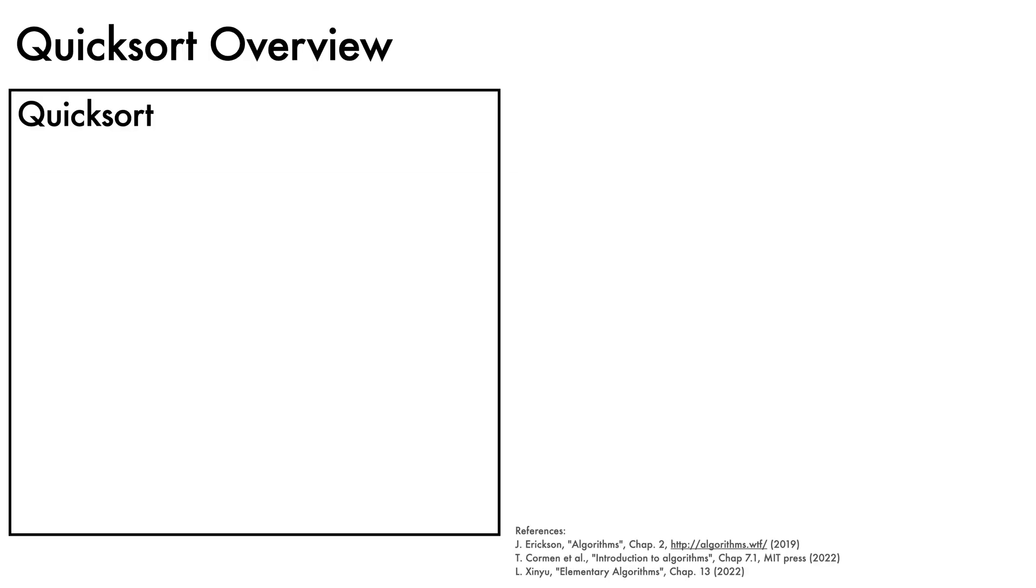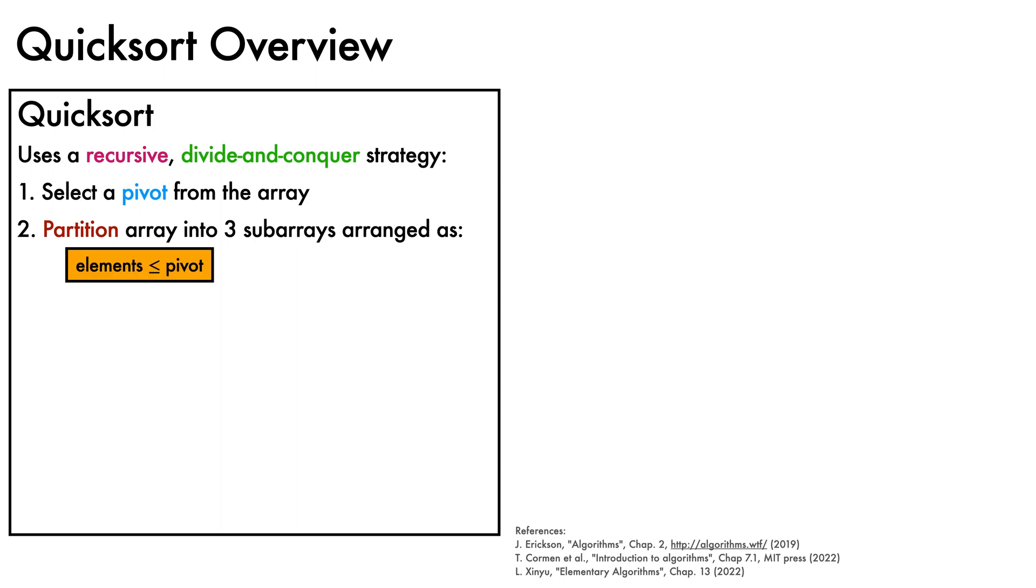The Quicksort algorithm adopts a recursive divide-and-conquer strategy that involves three steps. First, select a pivot from the current array to be sorted. Second, partition the array into three subarrays, arranged such that they contain the elements less than or equal to the pivot, the pivot itself, and the elements greater than or equal to the pivot. Note that in this step, either the first or third subarrays can be empty.